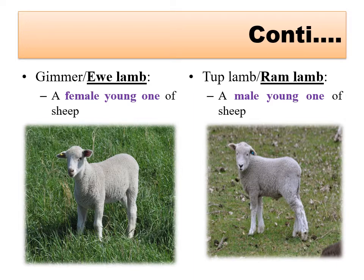A female young one of sheep is called a ewe lamb, and a male young one of sheep is called a ram lamb. Just as there were bull calf and heifer calf for cattle, in sheep the female young one is ewe lamb and the male young one is ram lamb.